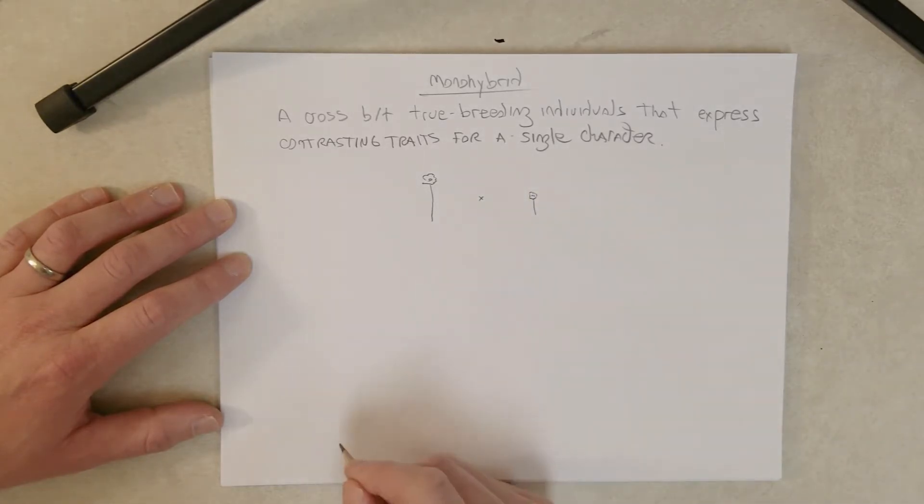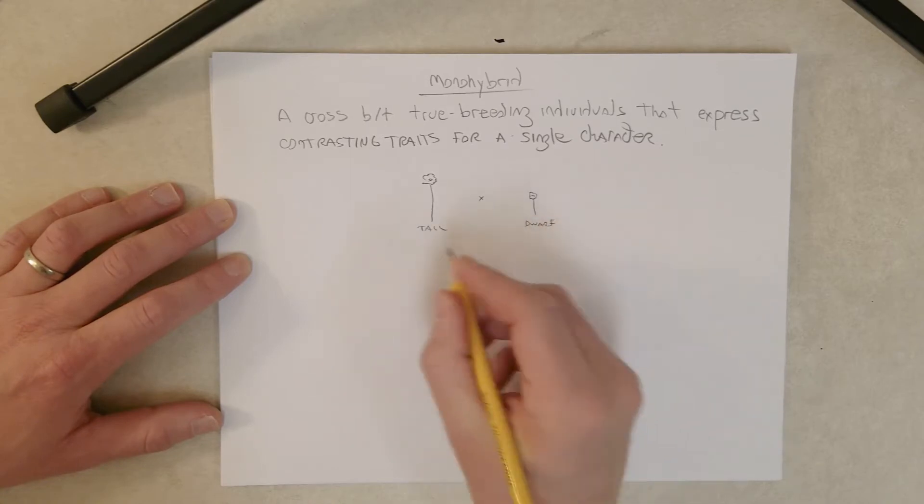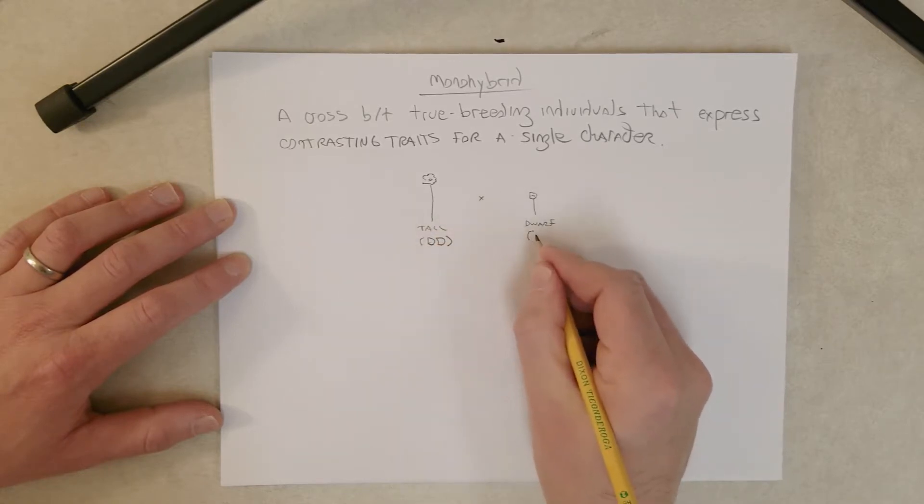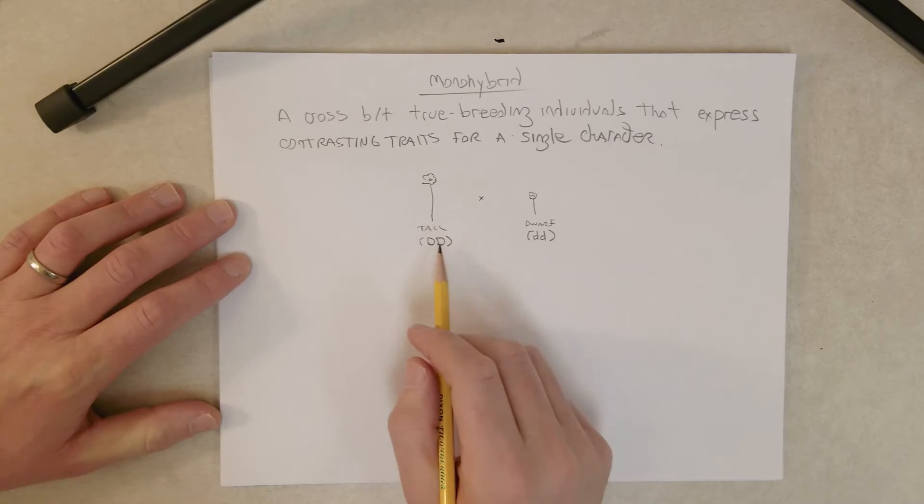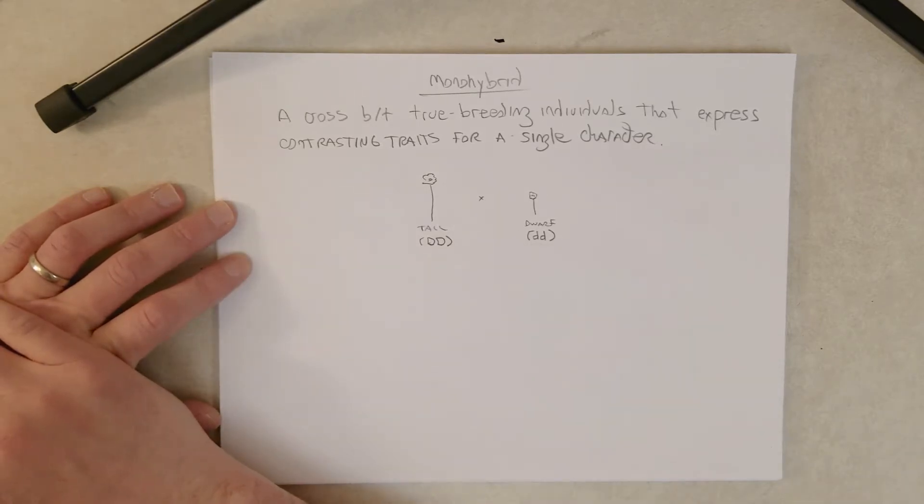Tall and dwarf, and true breeding means that the genotypes are homozygous: two big D's here, two little d's here. We just went over what the genotypes would be for the dominant alleles and the recessive alleles that cause these phenotypes.